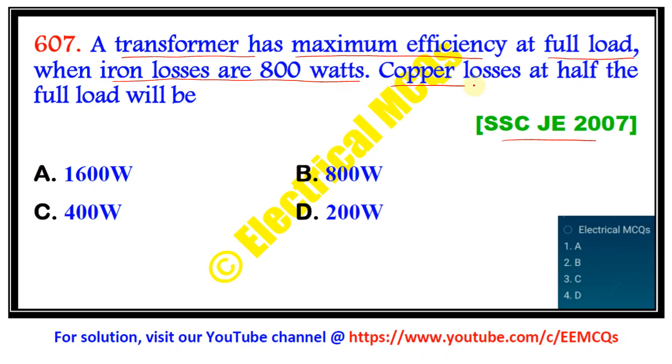Copper losses at half the full load will be what? So the condition is maximum efficiency, and at this maximum efficiency the iron loss is given to be 800 watts. Now, what do you know at maximum efficiency?